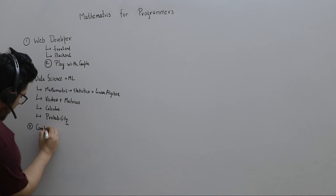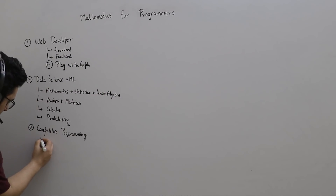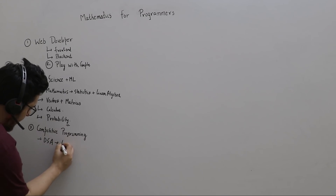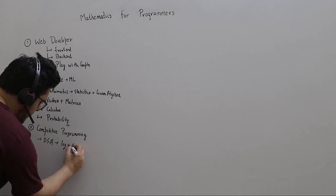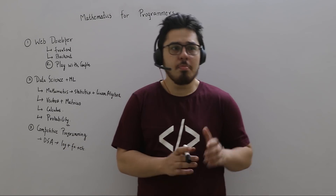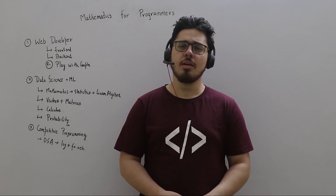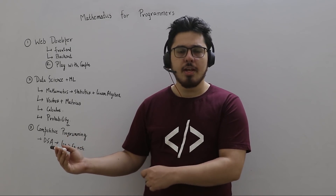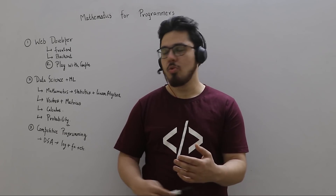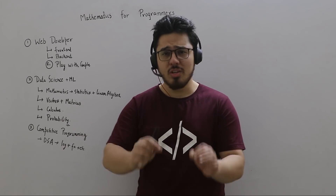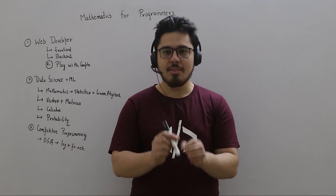Now I would like to move to competitive programming. If you want to learn competitive programming, then you have to learn data structures and algorithms. Topics like logarithms, number theory functions, prime numbers, and whole numbers — all these things you need to know. In competitive programming you will frequently encounter maths, so the stronger your maths, the better.